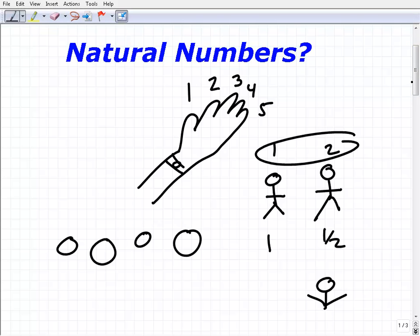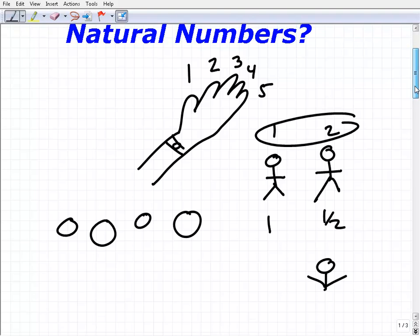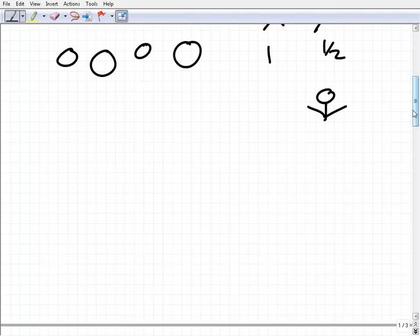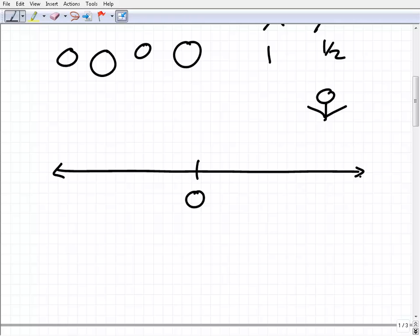Now I want to also bring this a step further and talk about natural numbers with respect to the real number system, because that's probably what you're studying here. So here is zero, here's a real number line. So we start, we have zero here.